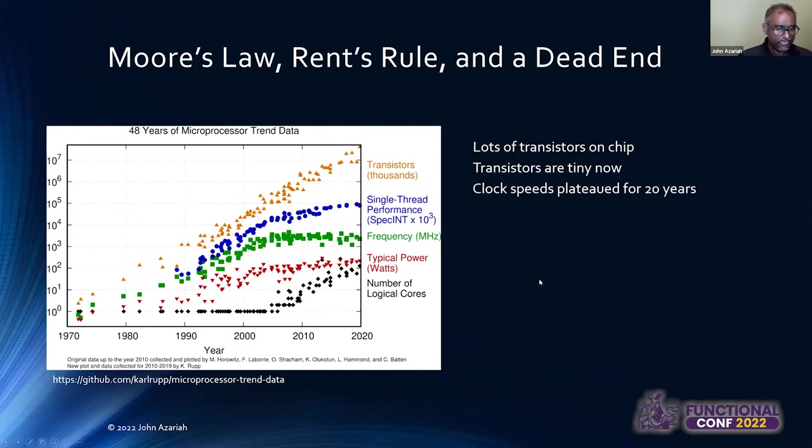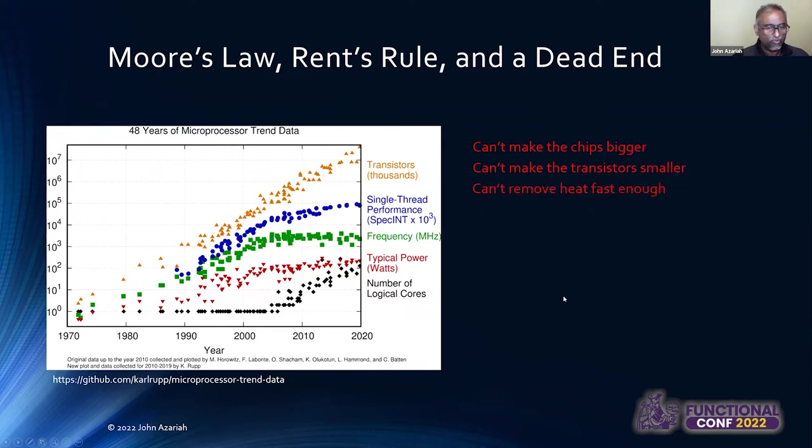This is fundamentally because we are hitting the limits of physics at this point. For example, this trend, the orange trend that you see in terms of the number of transistors on the chip, you can't make the chips any bigger, you can't make the transistors any smaller, because we are now reaching the point where transistors are literally toggled on by one electron. And you can't remove the heat fast enough. So this trend, while it's been held for a long time in terms of Moore's law, will actually plateau off.